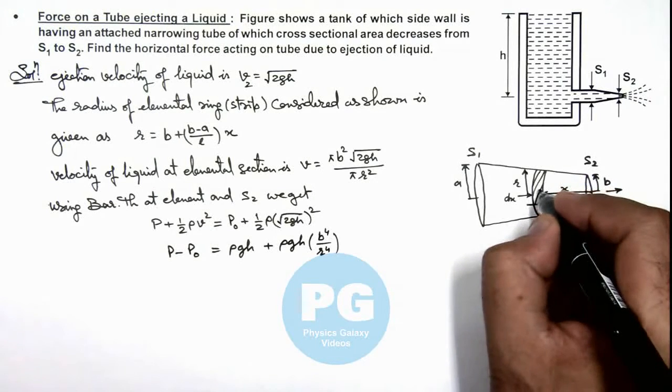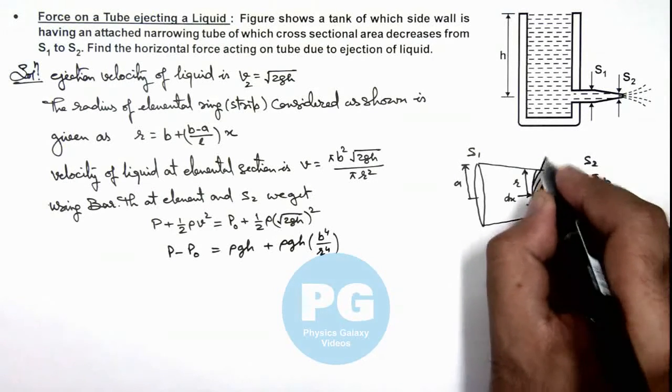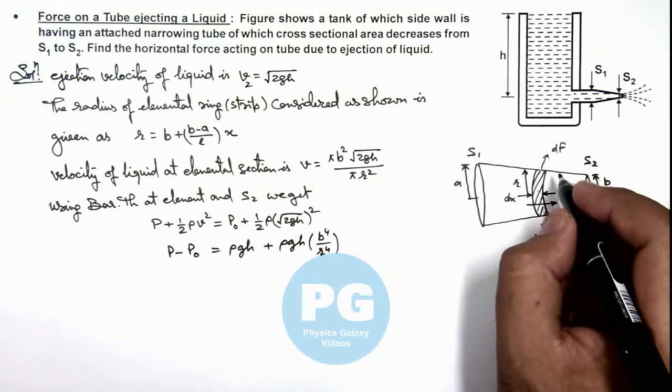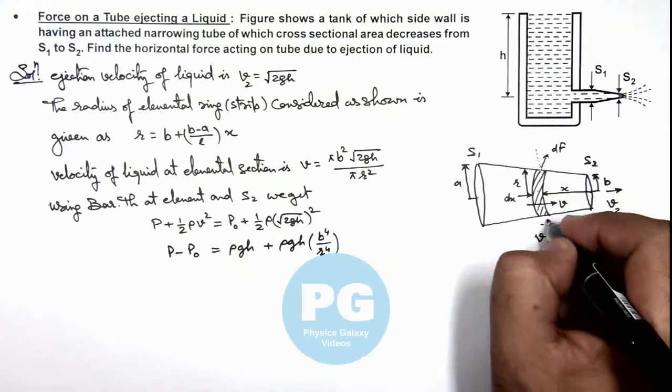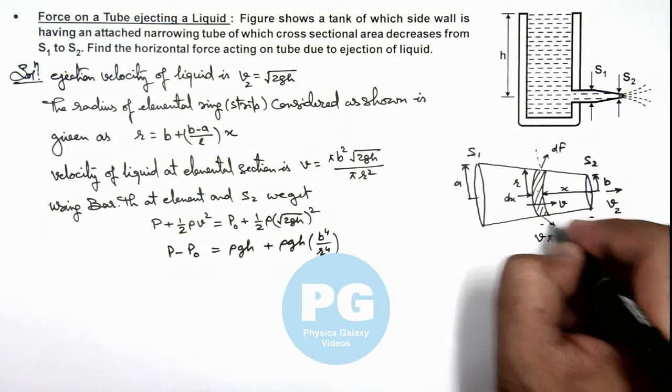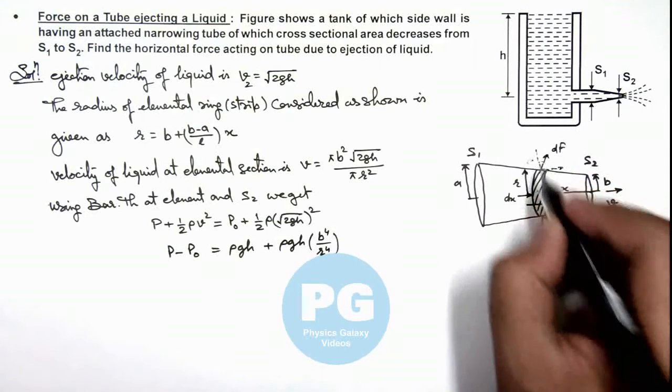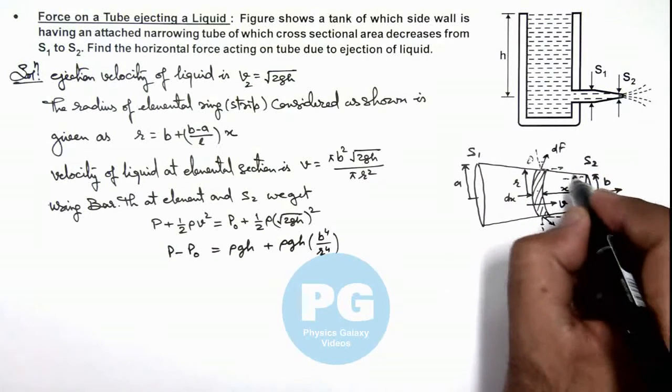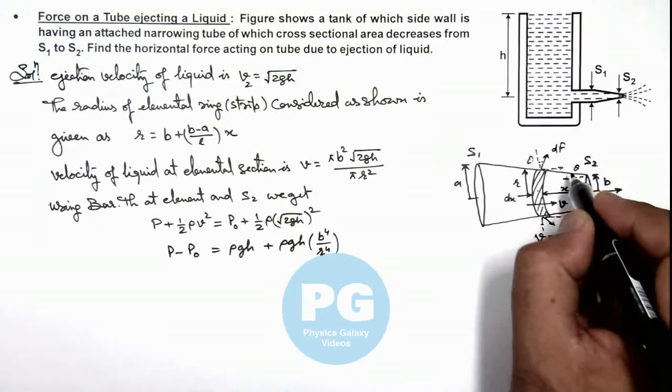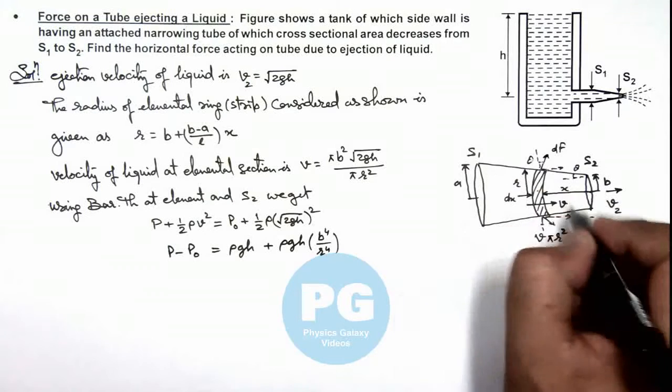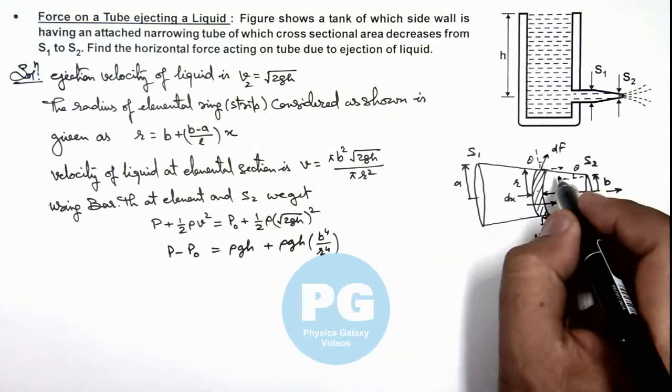Now we can see the pressure over here will exert a force dF on this elemental strip in normal direction, of which vertical component will get cancelled out and horizontal component will be added up. So if this angle is θ, we can write the net force acting on this tube will be dF·sin(θ) integration.